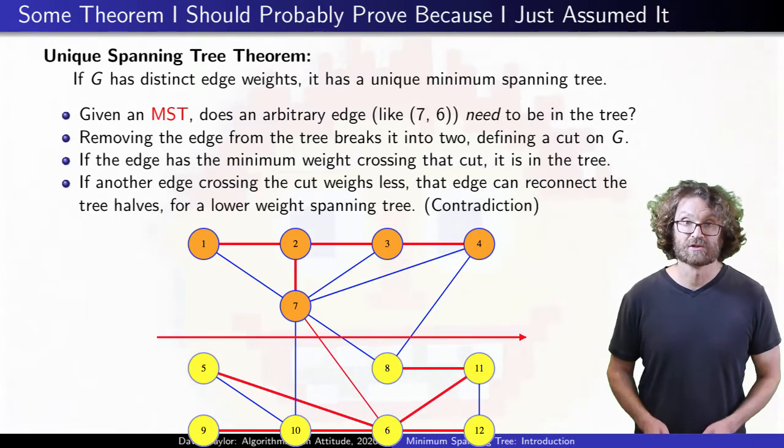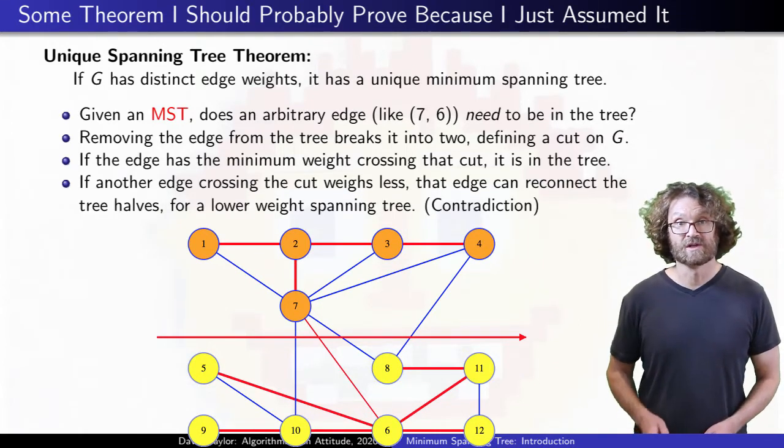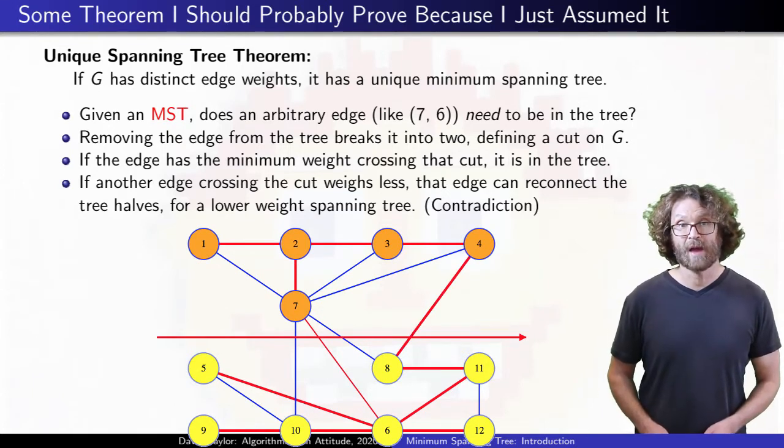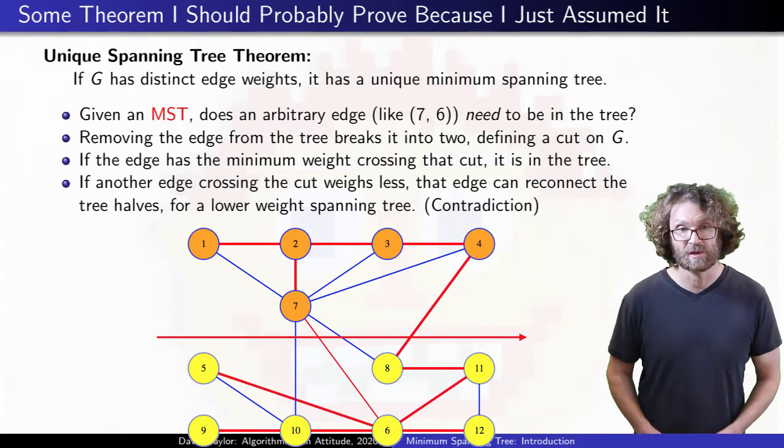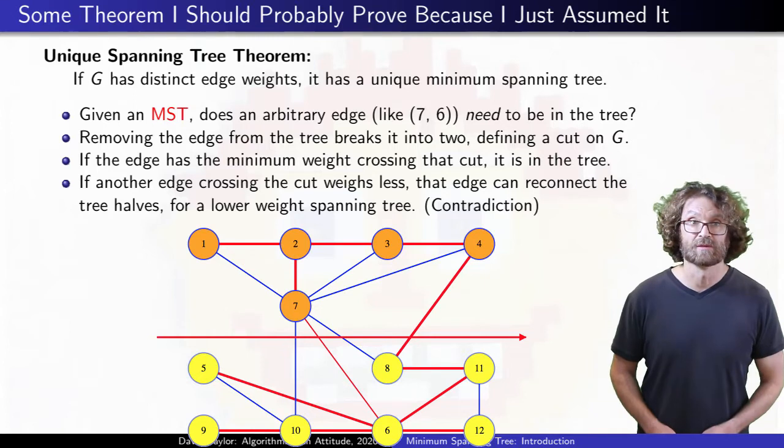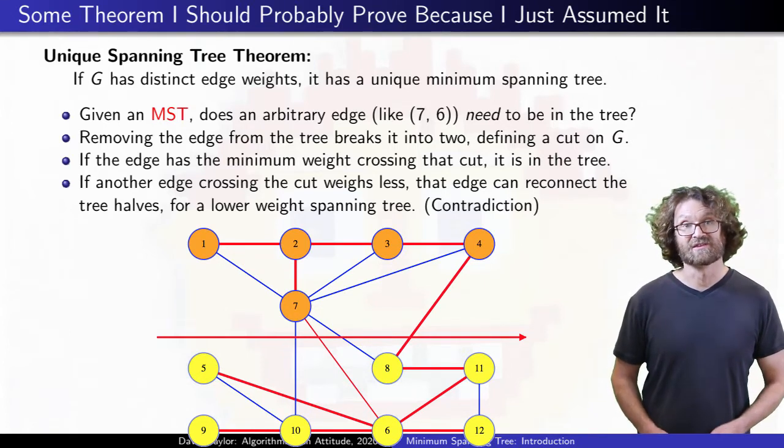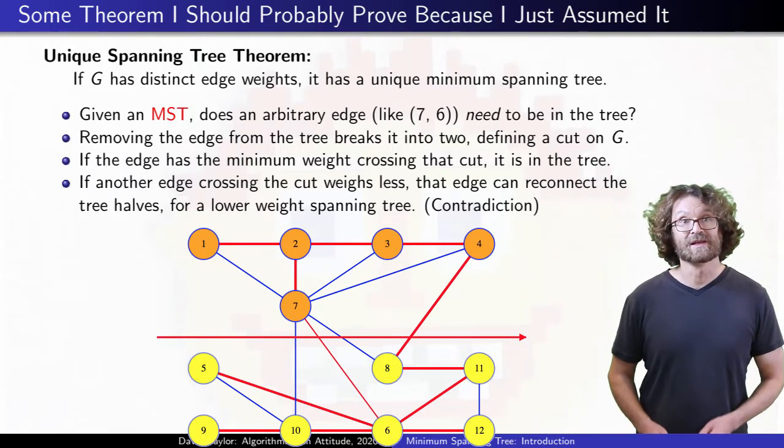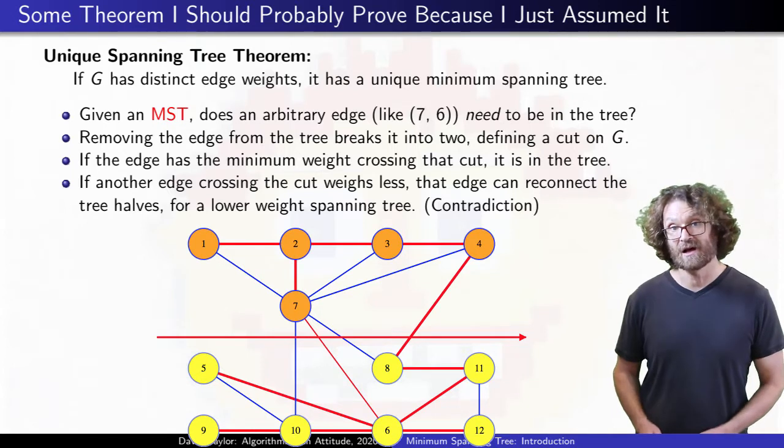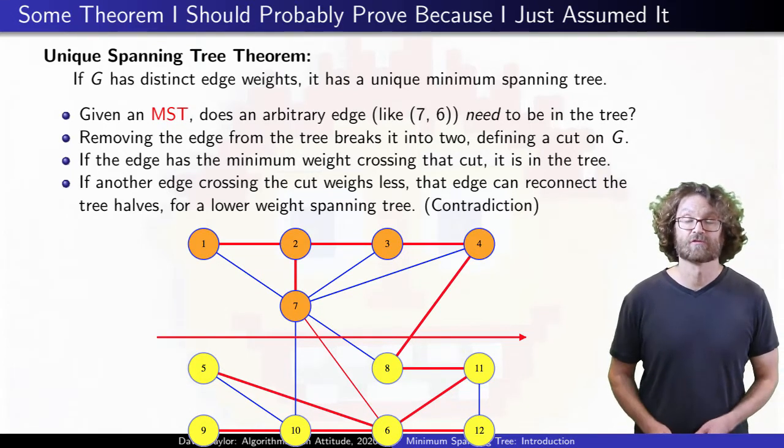If some other edge that crosses the cut weighs less, like the one between 4 and 8, then adding that edge to the remaining edges from our minimum spanning tree gives a new spanning tree with a lower weight than our first tree. That first tree was supposedly a minimum spanning tree, so that's a contradiction. So if the 7 and 6 edge is in the minimum spanning tree, it must be the minimum weight edge crossing that cut. So it's definitely in any minimum spanning tree, following the proof of our first theorem.